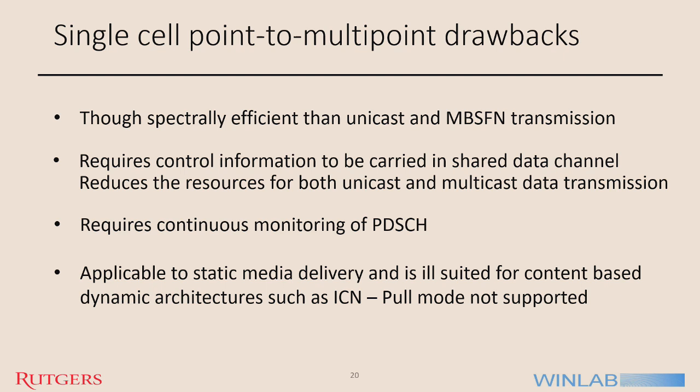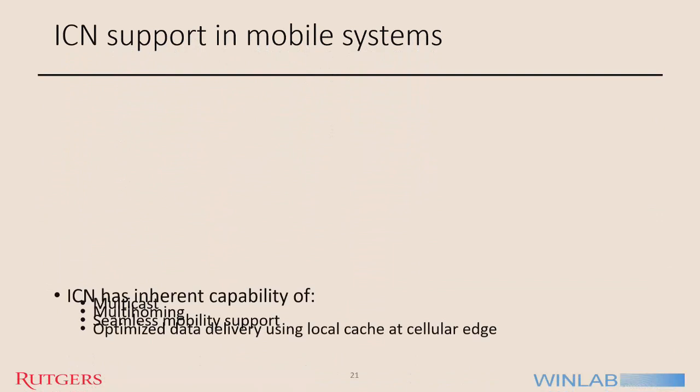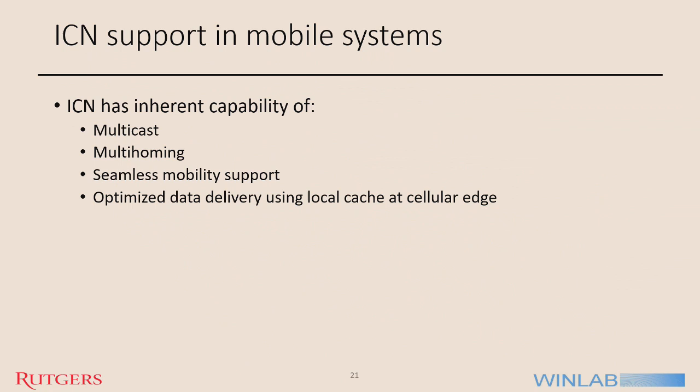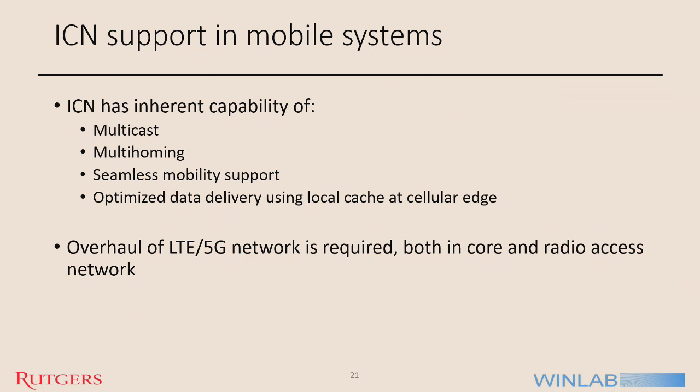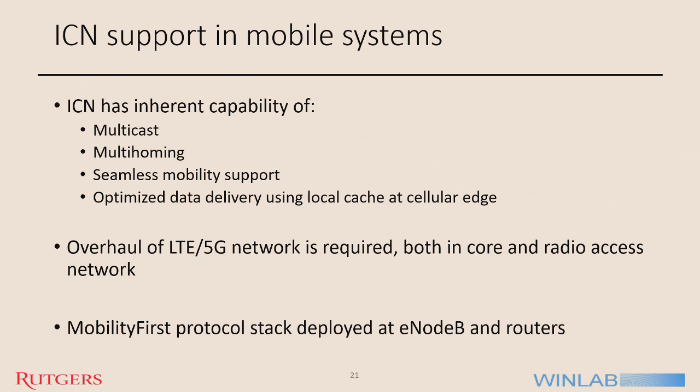Before going into the actual design, let me summarize the benefits provided by ICN: inherent capability of multicast, multihoming, seamless mobility support, and optimized data delivery. In order to utilize all these benefits, a complete overhaul of LTE or 5G core and radio access network is required. We can use MobilityFirst at eNodeB and routers as the MobilityFirst protocol stack. MobilityFirst is a clean-slate name-based architecture — it uses names instead of addresses. Content, devices, and context all have names, assigned using a name certificate service, and the names are dynamically bound to network addresses using the Global Name Resolution Service (GNRS).